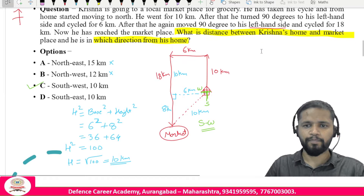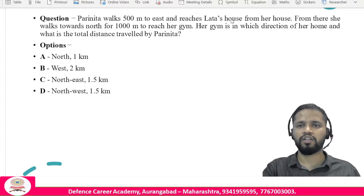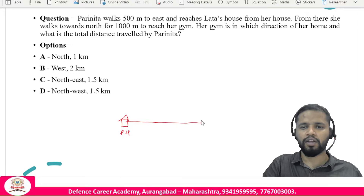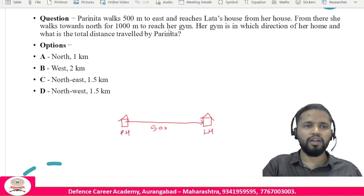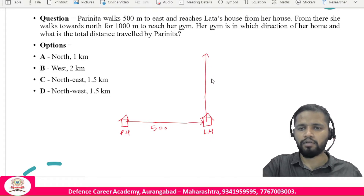Next question: Parinita walks 500 meters east from her house to reach Lata's house. From Lata's house, she then walks 1000 meters north to reach her gym.